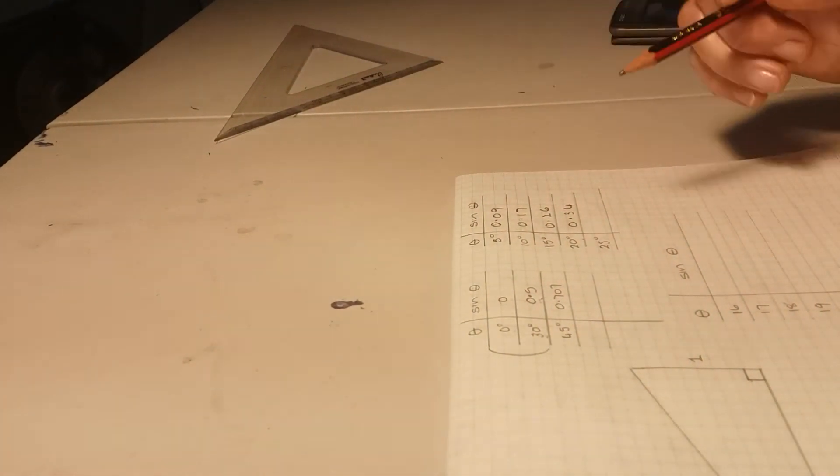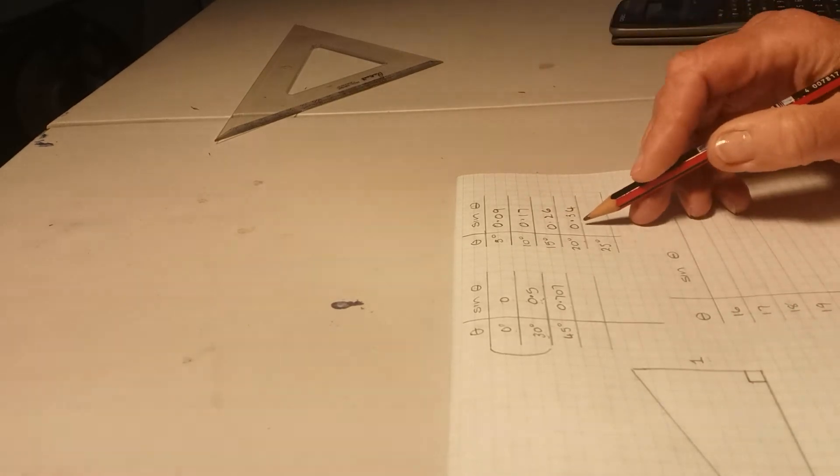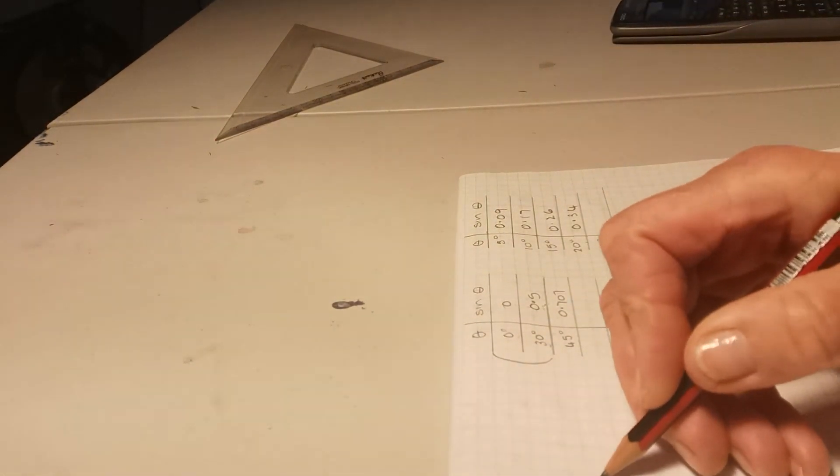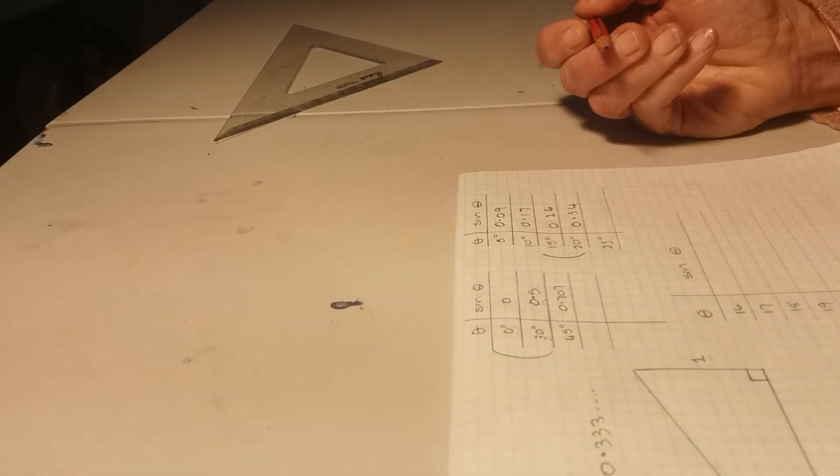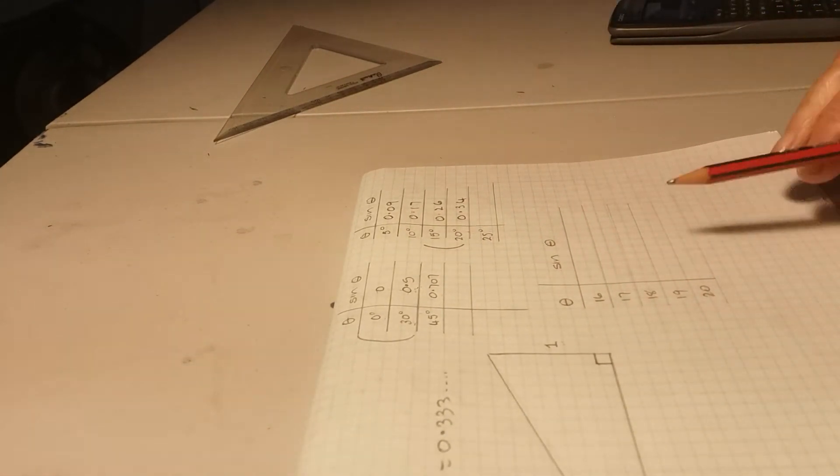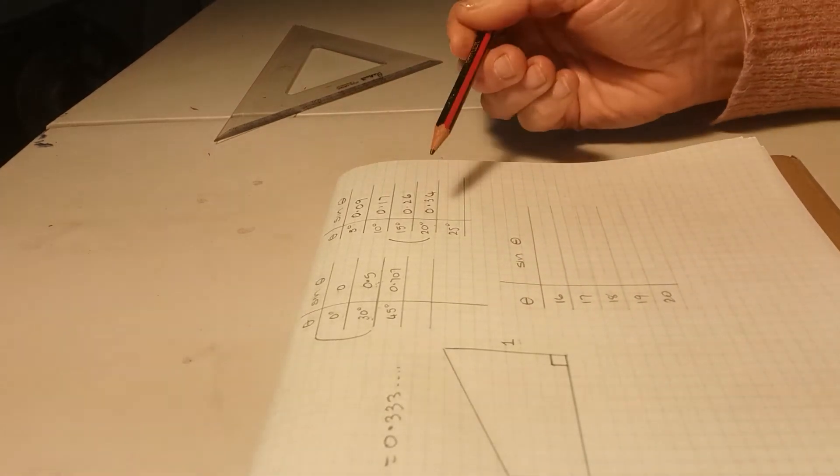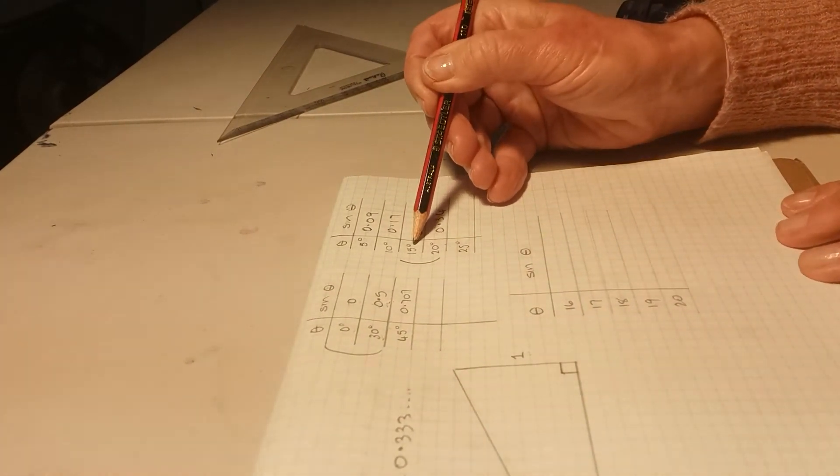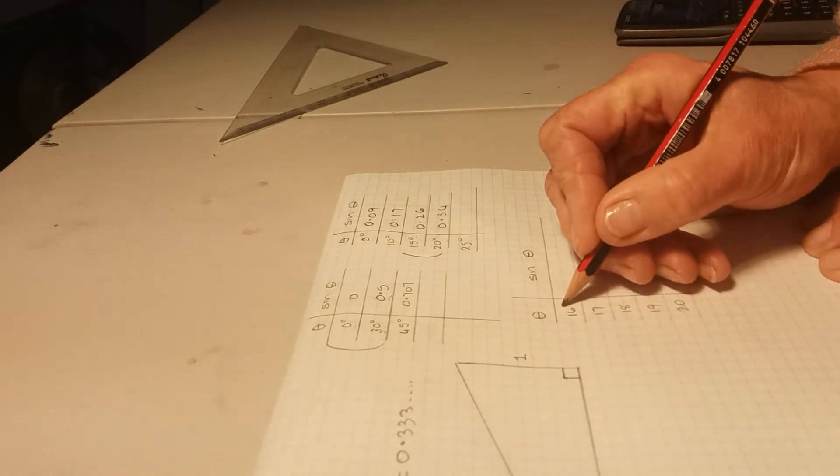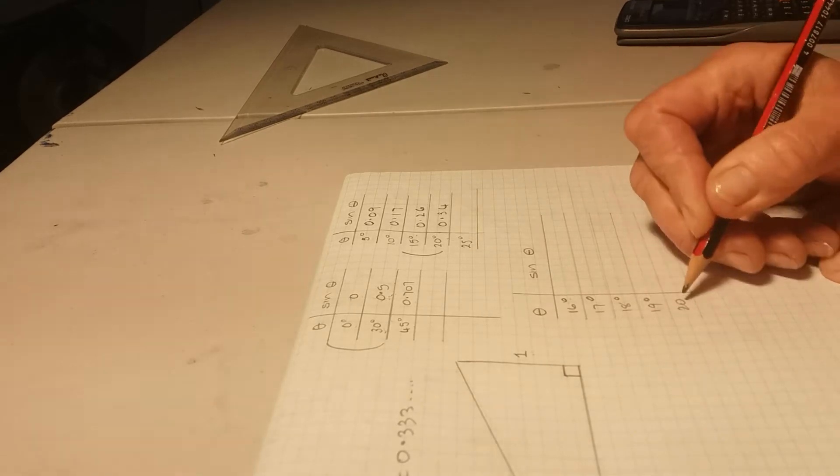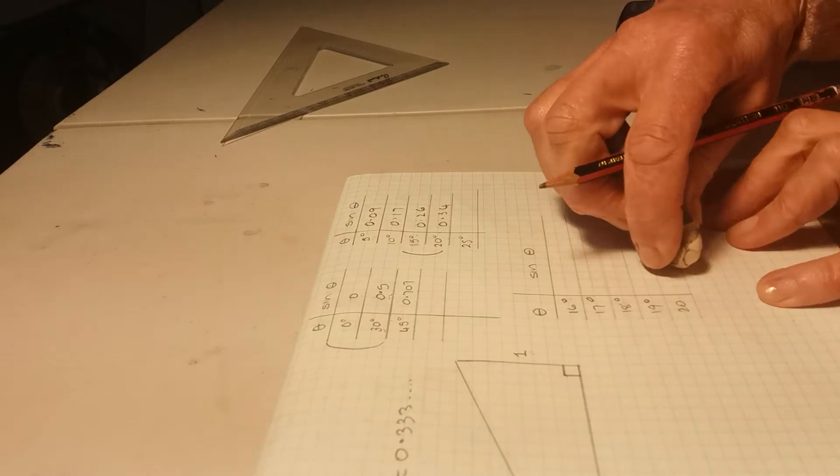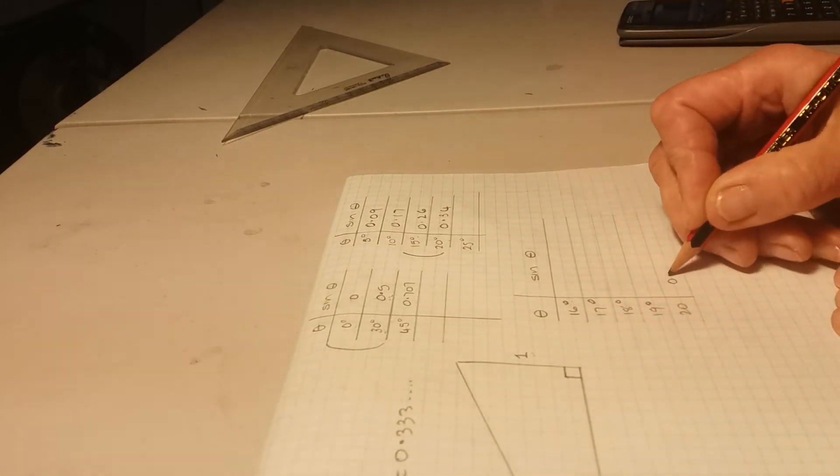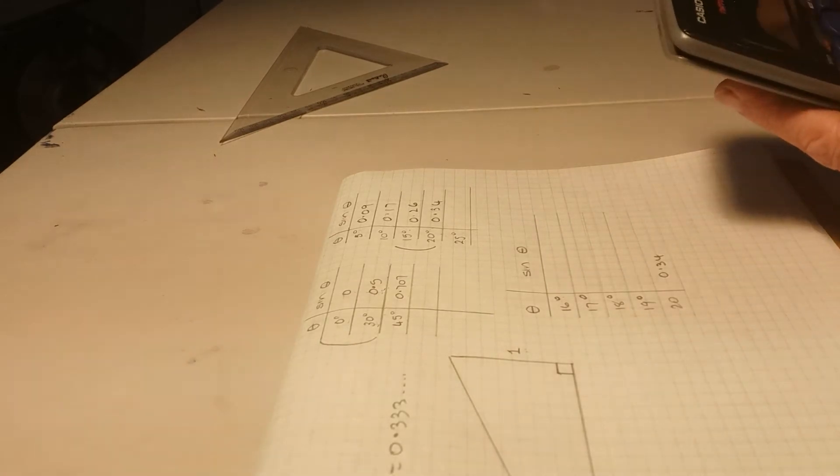So if we look at the table here, we can see that 0.1 third is 0.333 recurring. It's somewhere between 15 and 20 degrees. So we draw a third table now, and we split this up. So on this table, I've split up in equal increments between 15 and 20. So 16 degrees, 17 degrees, 18 degrees, 19. We don't really need the 20 degrees, because it's definitely not going to be 20 degrees. I'll just put 0.34 in there.